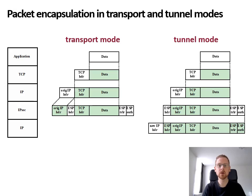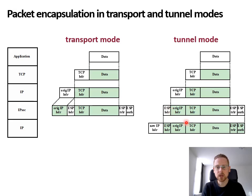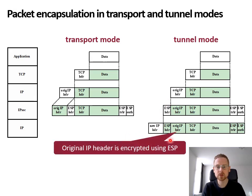In transport mode, only the IP layer payload is encrypted and authenticated — that means the TCP or UDP header and the application layer data payload are encrypted. The ESP header is inserted behind the original IP header, along with the ESP trailer and authentication. In tunnel mode, the original IP header is also encrypted and authenticated. The ESP header is added in front of the original IP header, and a new IP header is included, making the original IP header part of the encrypted and authenticated payload.